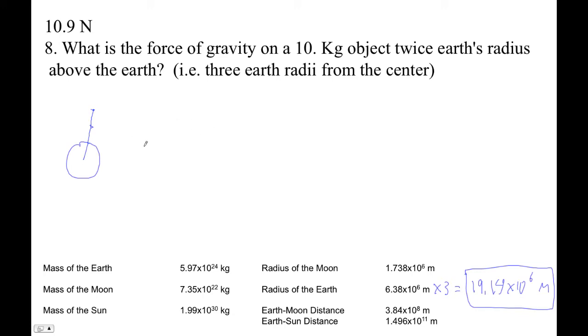All right, so now I'm just going to use this formula. Force is Gm1m2 over r squared, so 6.67E minus 11. This is one of the masses, right? So I'm going to go 10. And then the other mass is the Earth's mass. So that's this guy.